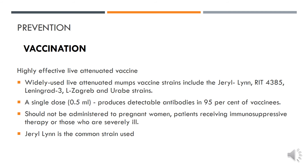Moving to prevention: vaccination remains the mainstay of prevention. We have a highly effective live attenuated vaccine against mumps in the form of MMR, standing for measles, mumps, and rubella. Many strains of mumps vaccine are used, including Jeryl Lynn, RIT 4385, Leningrad 3, L-Zagreb, and the Urabe strain, among others. However, Jeryl Lynn is the most commonly used strain.